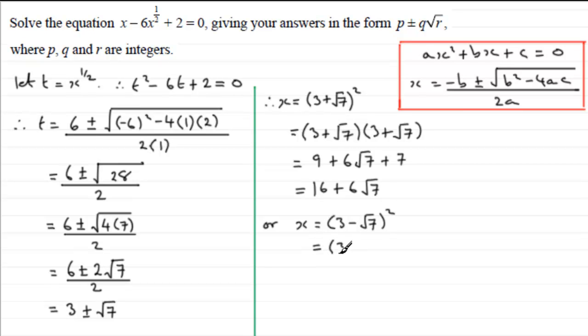And again if we expand this as 3 minus root 7 multiplied by another 3 minus root 7, then we're going to get 3 times 3 is 9, and then we get minus 3 root 7 minus another 3 root 7 so that's minus 6 root 7, and we've got minus root 7 times minus root 7 which is plus the root of 49 which is 7. And finishing this one off we've got 9 and 7 which is 16 but we've got minus 6 root 7.